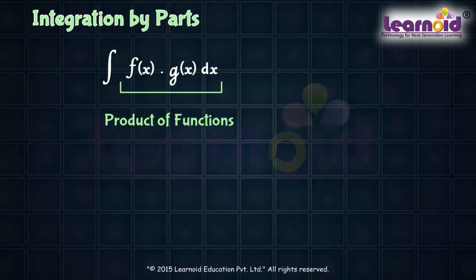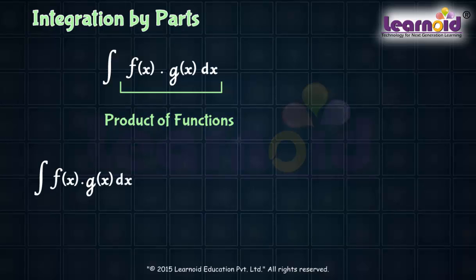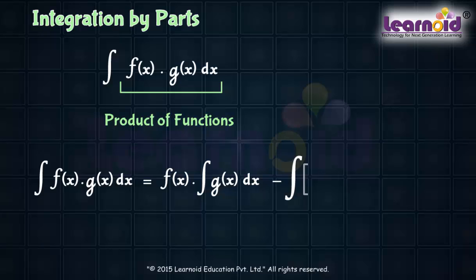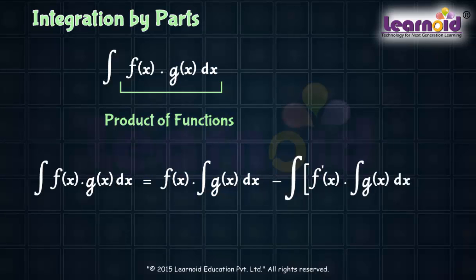Let f and g be any two differentiable functions of x. Then integration of the product of f(x) and g(x) is equal to f(x) into integration of g(x) minus integral of differentiation of first into integration of second.